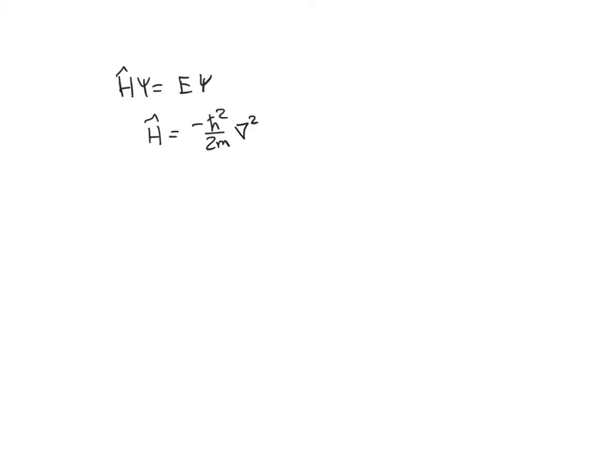And I'm going to write del squared here because we have a three-dimensional problem, plus the potential energy operator. And this potential energy operator depends on R, which is the distance between the electron and the nucleus or the proton.